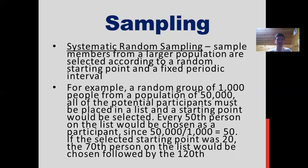Systematic random sampling is taking a sample of members from a larger population and selecting a random sample point with a fixed periodic interval. For example, with a population of 50,000 people, you take a random group of 1,000, then select a starting point — say the 20th person — and increase by 50 each time, so you would look at the 20th, 70th, 120th person, and so on.